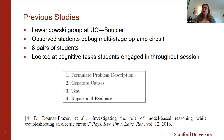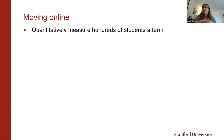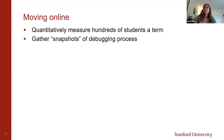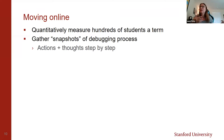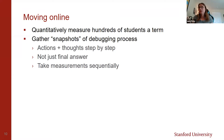This is why we decided to move online — we really want to quantitatively measure hundreds of students per term. We want to gather snapshots of their debugging process. A problem with paper-and-pencil tests is that students can erase things; they only show us their final product. We really want to know their missed thoughts. The nice thing about doing it on the computer is they click next and can't erase what they wrote before. We're trying to collect their actions and thoughts step by step — not just their final answer — and see how they interact with new information, what measurements they take in what order, and at what point they think they're done.